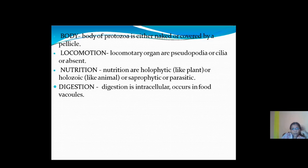The body of Protozoa is either naked or covered by a pellicle. Regarding locomotion, the locomotory organs are pseudopodia or cilia. In some animals, locomotory organs are absent. For example, in Amoeba the locomotory organs are pseudopodia, while in Paramecium the locomotory organs are cilia. Different organisms have different locomotory organs.